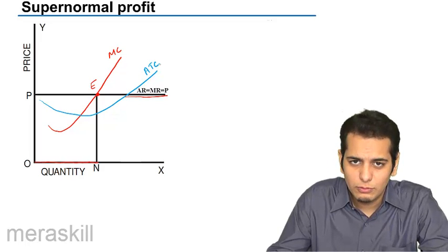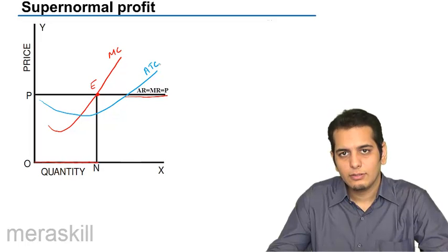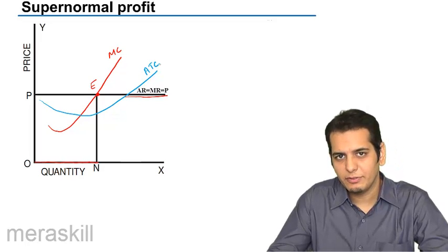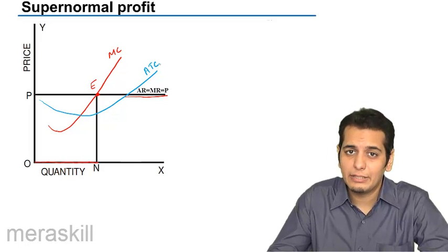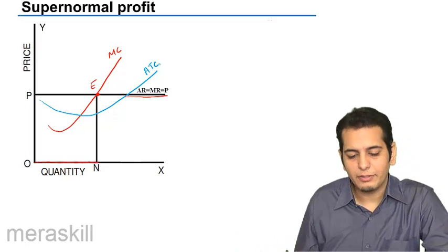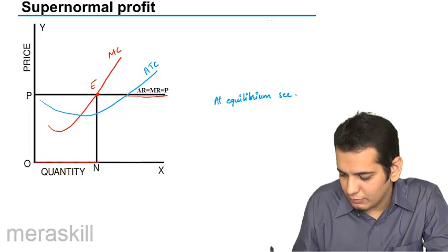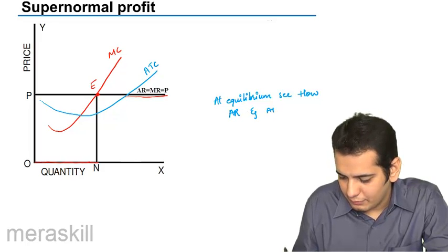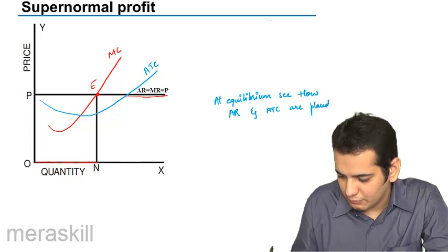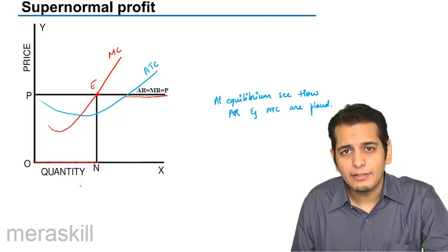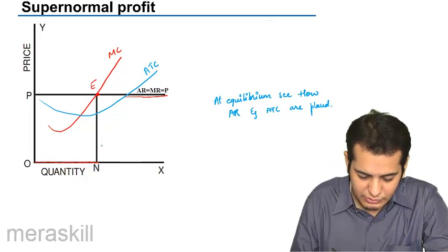Now how do you know if the firm is actually earning profits or it is at a situation of break-even or incurring losses? The important thing to note is at equilibrium, see how AR and ATC are placed. So this is the quantity, ON is the quantity, and at this quantity, how much is the average total cost?